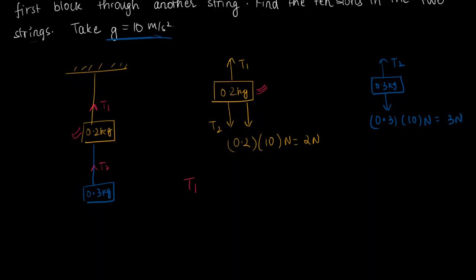So T1, let's take this direction to be positive and this to be negative. So T1 minus T2, since this is in the opposite direction, and again minus 2 is equal to 0. We are taking everything in newtons.